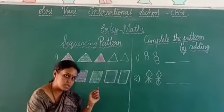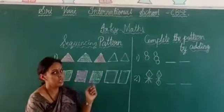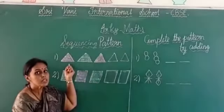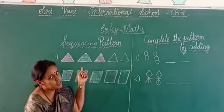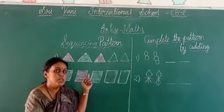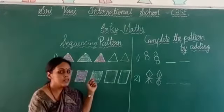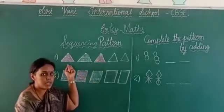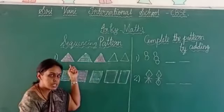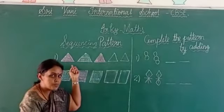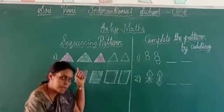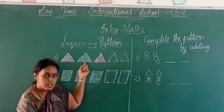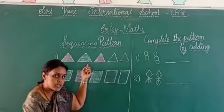We are going to color the object. First, what is this object? It is a triangle. Okay, we are going to color the triangle. What is the first color of the triangle? It is pink color. What is the next color? What is the next color of the triangle?